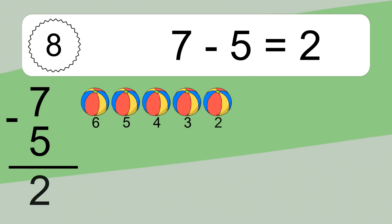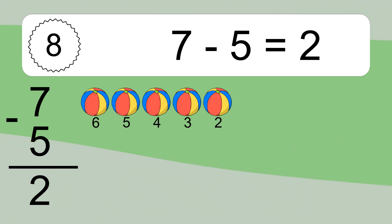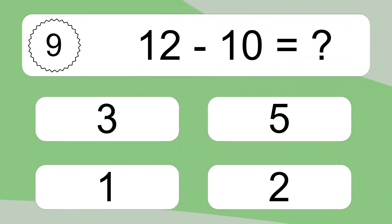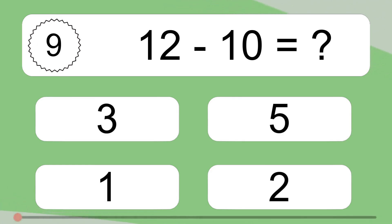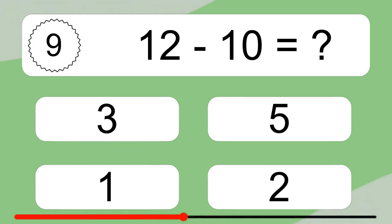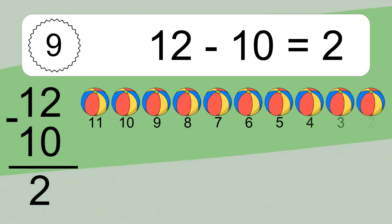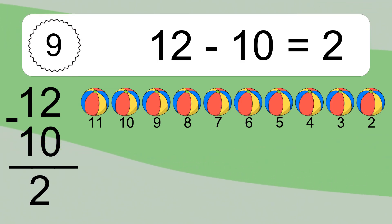7 minus 5 equals what? 7 minus 5 equals 2. Let's count it: 6, 5, 4, 3, 2. 12 minus 10 equals what? 12 minus 10 equals 2. Let's count it: 11, 10, 9, 8, 7, 6, 5, 4, 3, 2.